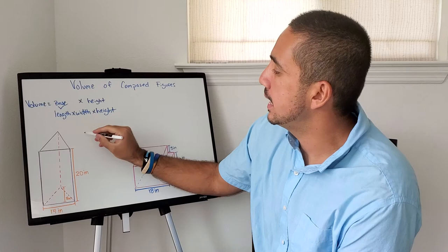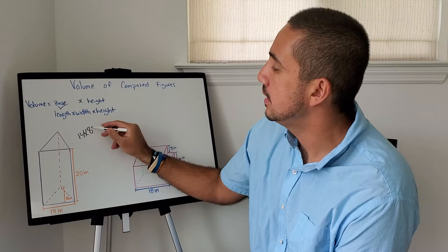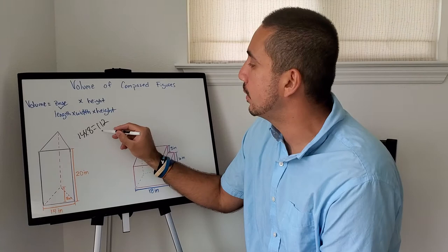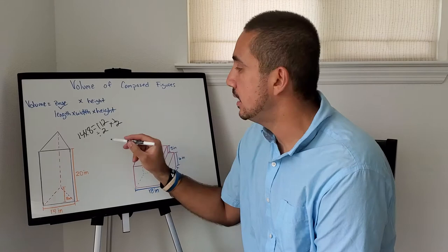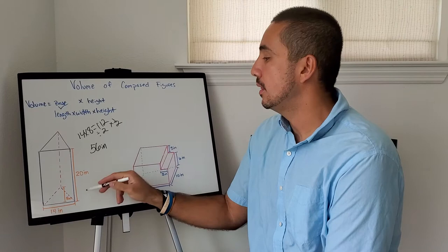We've got 14 times 8, that's the base down there. That's going to equal 112. But since it's a triangle, remember we're going to divide by 2 or multiply by 1 half. That's going to equal 56 inches. What are we missing? The height.